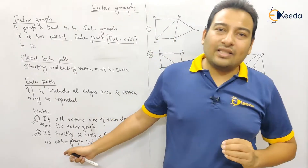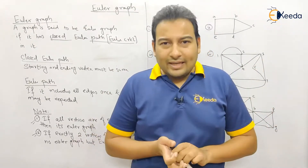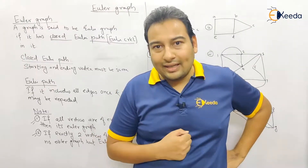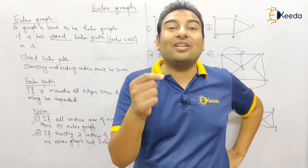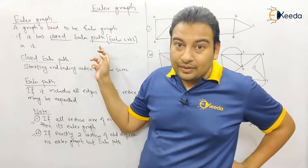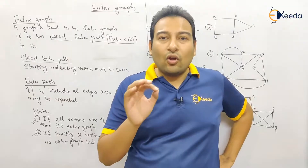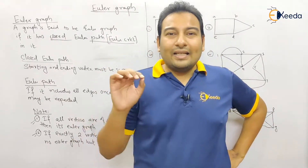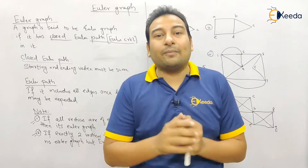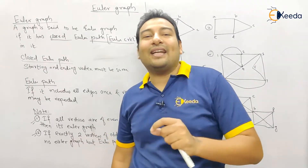There is one additional special case: if there are exactly two vertices with odd degrees, it obviously cannot be an Euler graph. But there can be an Euler path. The difference: an Euler graph contains a closed Euler path (starting and ending vertex same). If exactly two vertices have odd degree, there is no closed Euler path, but there will be an Euler path that starts from one odd-degree vertex and ends at the other.